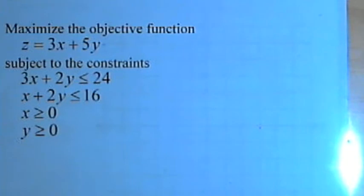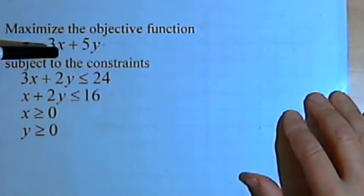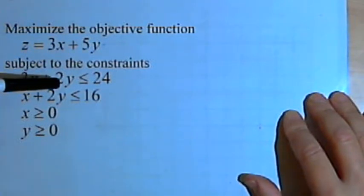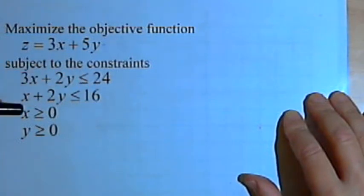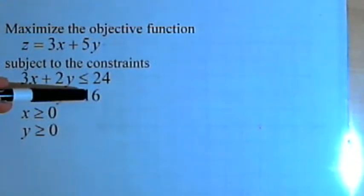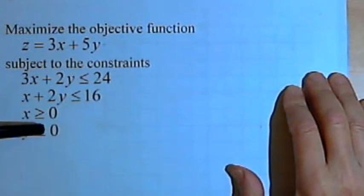Maximize the objective function z equals 3x plus 5y subject to the constraints: 3x plus 2y is less than or equal to 24, x plus 2y is less than or equal to 16, x is greater than or equal to 0, and y is greater than or equal to 0.